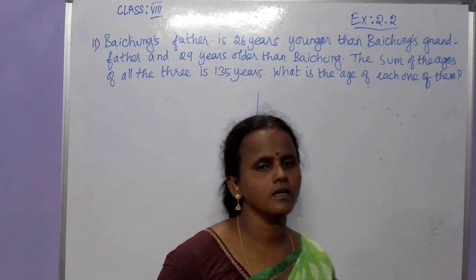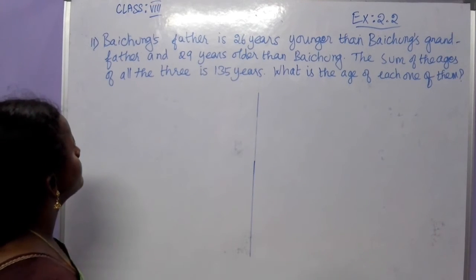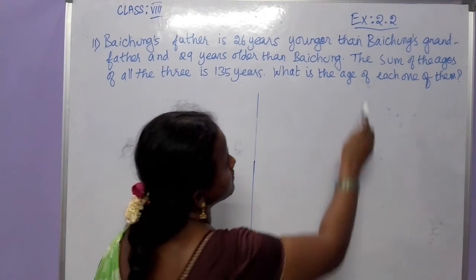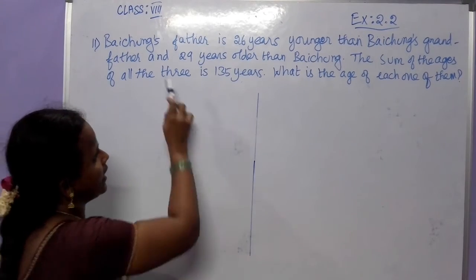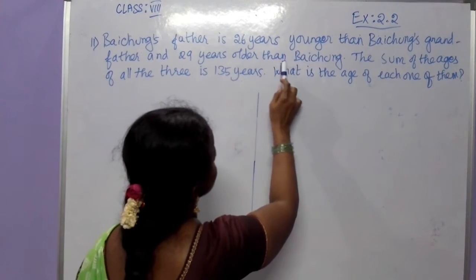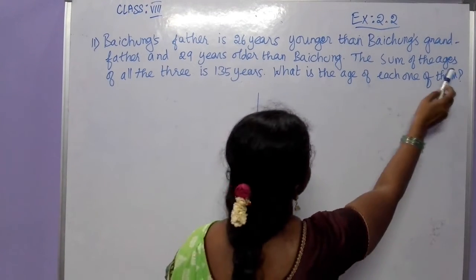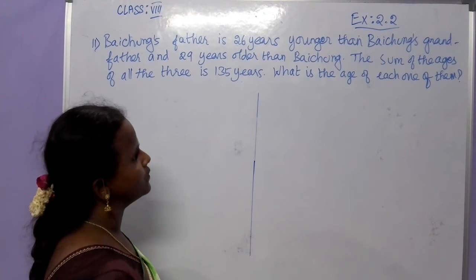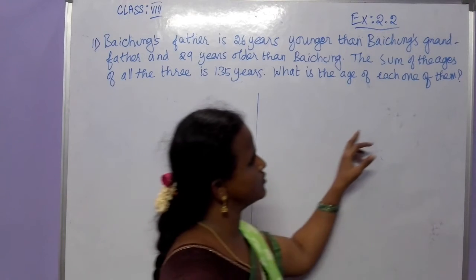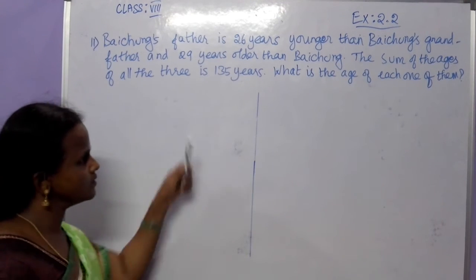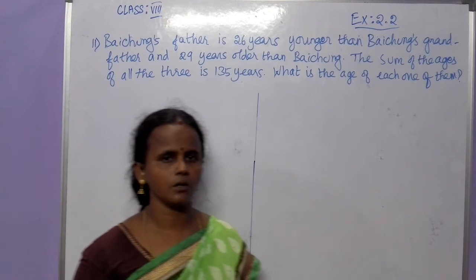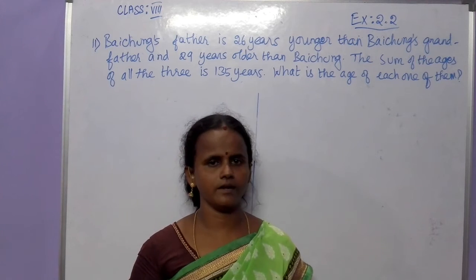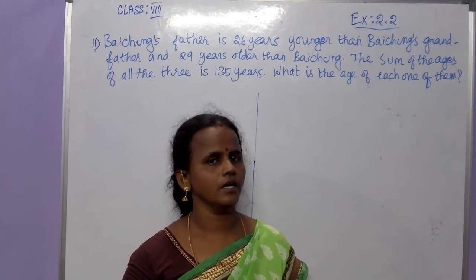Next, we are going to see the 11th question. Pacham's father is 26 years younger than Pacham's grandfather and 29 years older than Pacham. The sum of the ages of all three is 135 years. What is the age of each one of them? Three persons are included: Pacham, Pacham's father, and Pacham's grandfather.